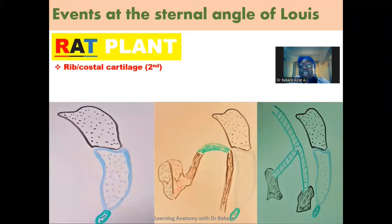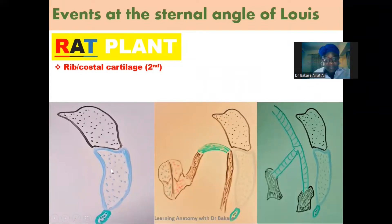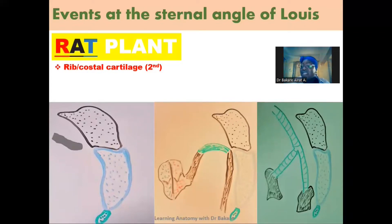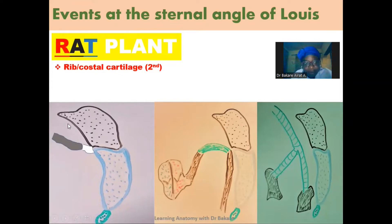For R, we have the rib and the costal cartilage — specifically the second rib and the second costal cartilage. This is the configuration of the sternum: this is the manubrium, this is the body of the sternum, and this is the xiphoid process. We have the manubriosternal joint between the manubrium and the body of the sternum, and this is also called the Sternal Angle of Louis. At this level, we have the second rib and the second costal cartilage, which is connected to the sternum at the manubriosternal joint through the costal cartilage, highlighted in white.